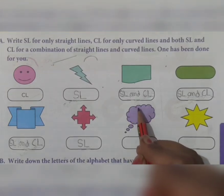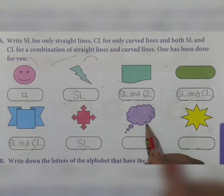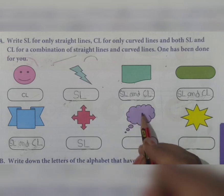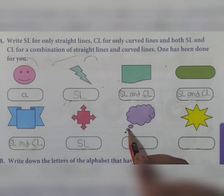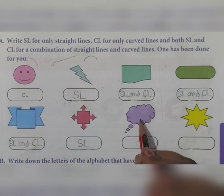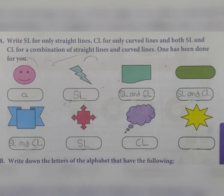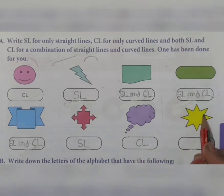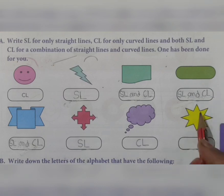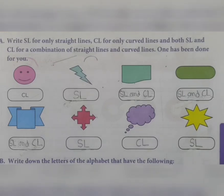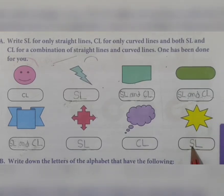Now see this figure - all curved lines. This circle is also made up of curved lines, therefore we write CL. Now see this star - in this star all are straight lines, no curved lines. Therefore what we write here is SL - S for straight, L for line.